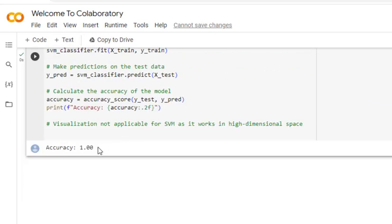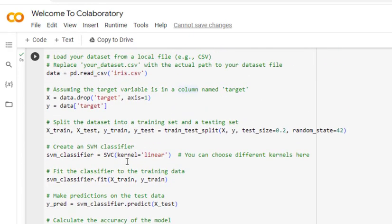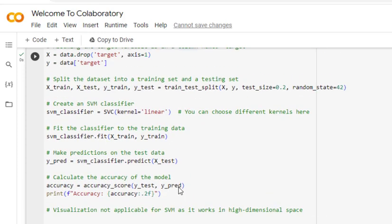Yes, this is the output. We are getting accuracy as 1.0, the best possible value. This is how we execute this code. I will share the code in the description section of the video. You can download from there. Now let us see the explanation of the code.